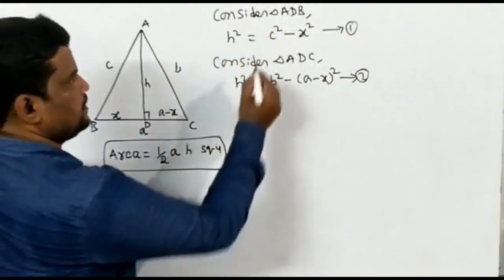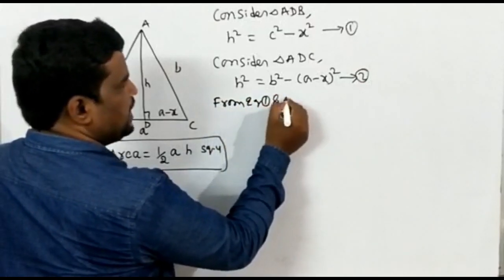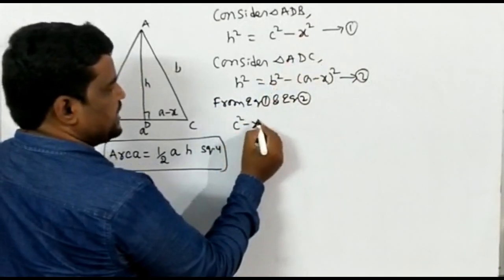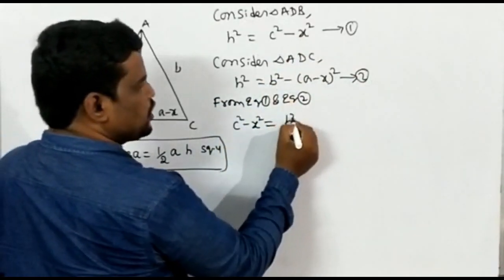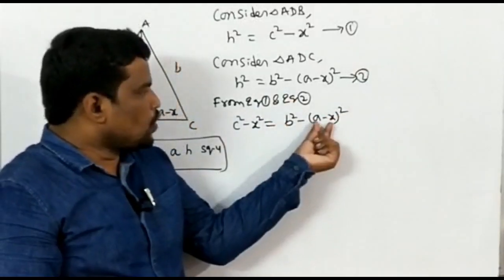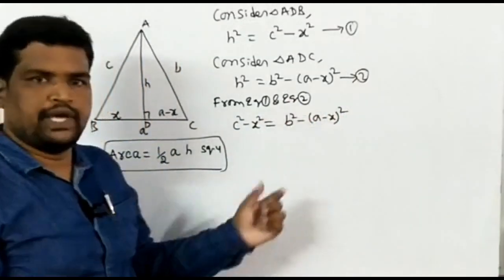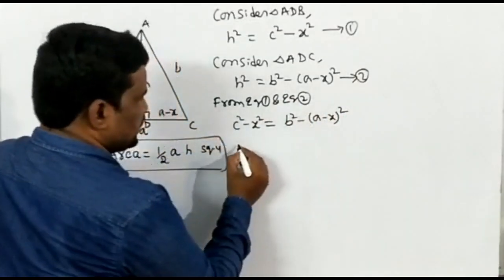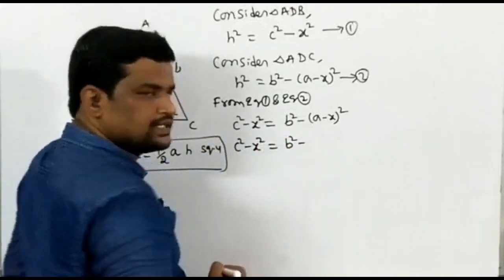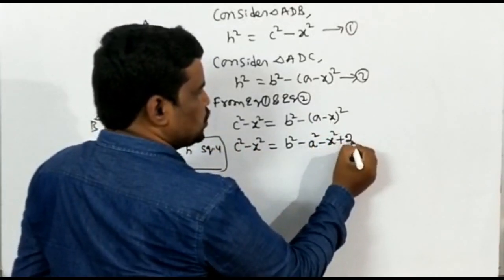Equating the right-hand sides of equations 1 and 2: C² − X² = B² − (A−X)². Expanding (A−X)² using the algebraic identity: C² − X² = B² − (A² − 2AX + X²).